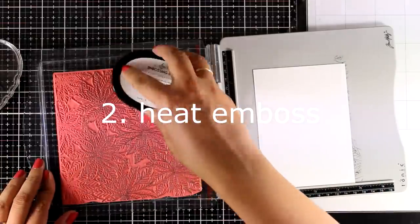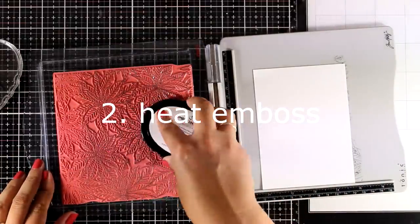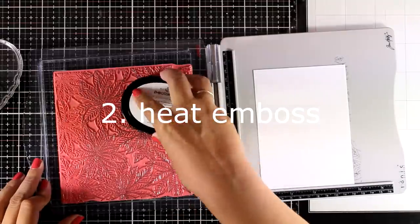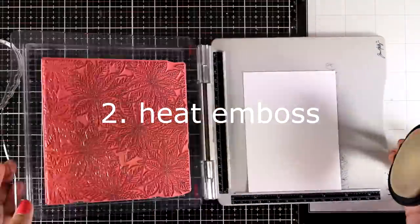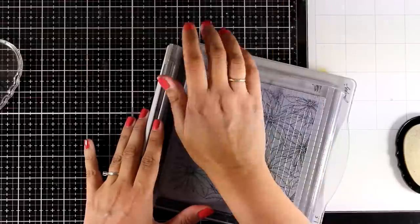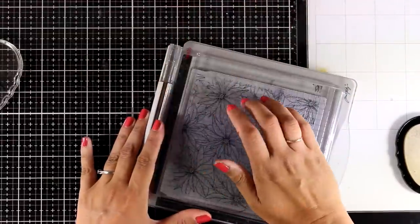Now let's move on to the second technique using a background stamp. This time I'm going to just do some embossing, heat embossing. This is not as time consuming as the first technique and you can pull together cards really quickly.